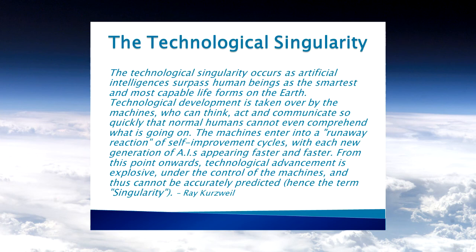We've talked about the singularity before. The Rich Sutton presentation from December 3rd is really easy to understand — a good way to approach this. The Marcus Hutter side, which I'm going to give you today, is the most difficult way to think about it, but also the most intriguing. It's the idea of machines becoming smarter than we are, and what happens next.